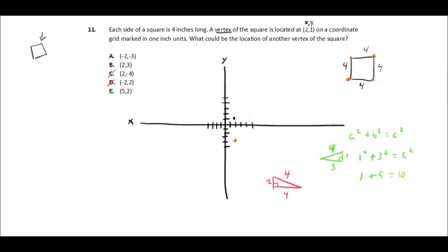Let's look at B. So B says 2 and then 2, 3. And so if I go over 2 and up 3, then I'm right here, and that's not going to work because then I'm just 2 inches away from this original vertex, so that won't work. So it's probably A, but let's double check it.